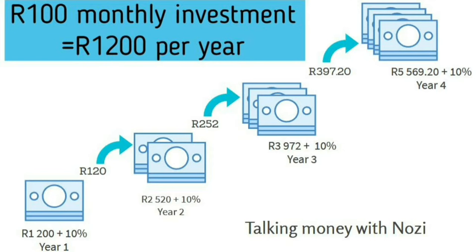You start year three with 2,772 rand. You contribute another 1,200 and get a total of 3,972 rand. You earn 10% of this balance, which is 397 rand and 20 cents. So 3,972 plus 397.20 gives you 4,369 rand and 20 cents. Then you contribute 1,200 rand, bringing your total to 5,569 rand and 20 cents. And this cycle will continue for as long as you stay invested and contributing.